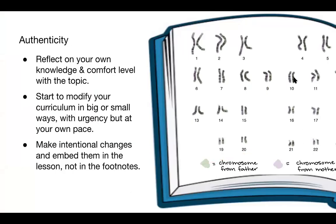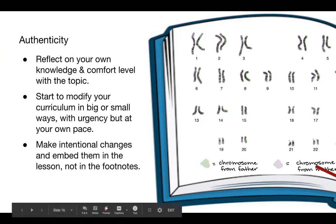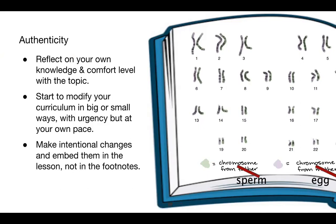Our first example is thinking about authenticity. Authenticity asks us to reflect on our own knowledge and comfort level with the topic, to think about modifications of the curriculum — big or small — with urgency but at your own pace, and to make intentional changes embedded into the lesson, not into the footnotes. On screen there's an example of a diagram that shows a particular stereotype of an individual and says 'chromosome from father, chromosome from mother.' Because of the many different ways that families are made, one small change we could make is simply eliminating that particular language.